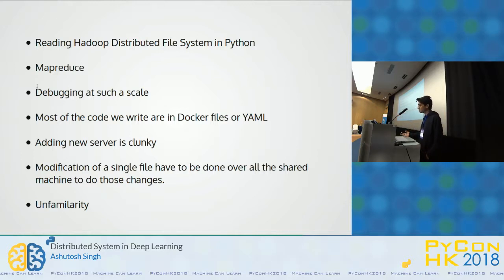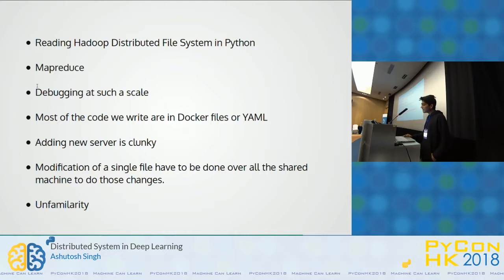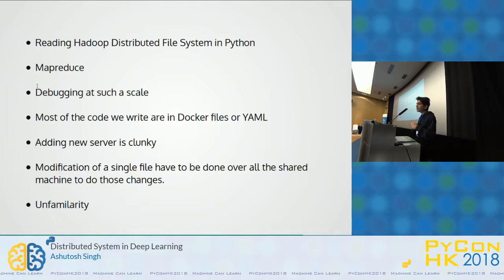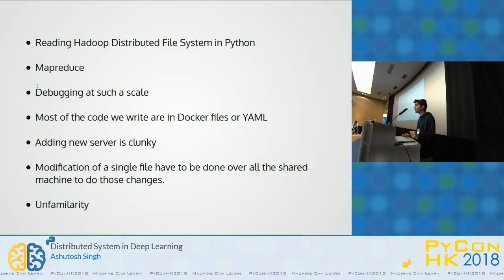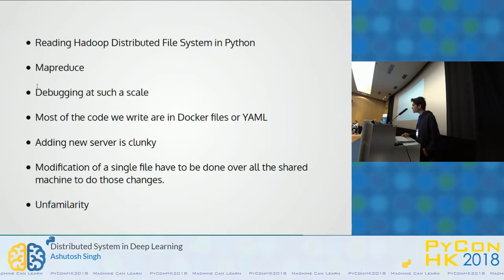Most of the code we write is in Docker, deployed on virtual machines, which is not ideal. Adding new servers is problematic because the amount of computation has been increasing and is going to continue in an exponential way — they are not going to decrease any time soon. Modifying any single file is very difficult because we have many machines and have to make every single change across all other machines too. Most people aren't familiar with distributed systems.